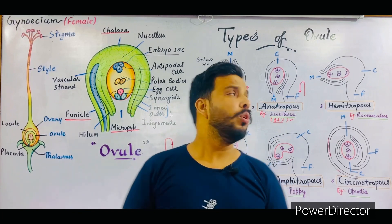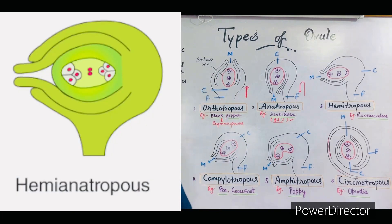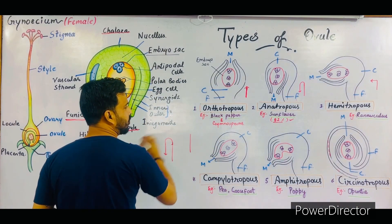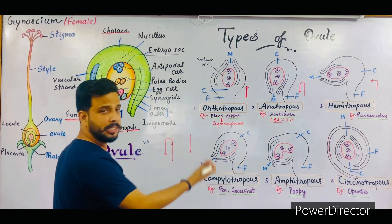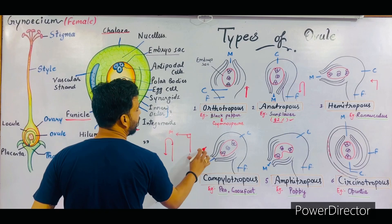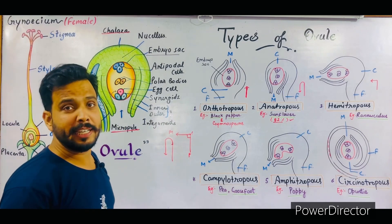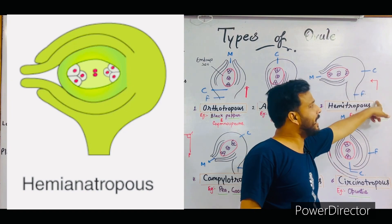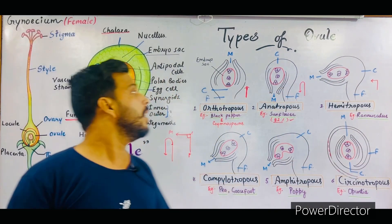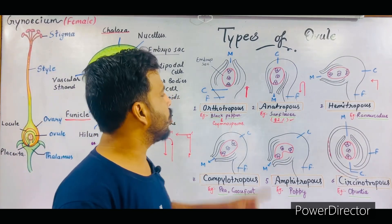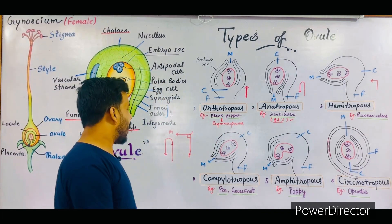The next ovule is hemitropous. Hemitropous is a mid-condition between orthotropous and anatropous. If the ovule is straight it is orthotropous; if inverted it is anatropous; but hemitropous is neither — it makes a right angle. The micropyle, chalaza, and funicle produce a right angle of 90 degrees, so the ovule is transverse. The example of hemitropous ovule is Ranunculus, a very beautiful flower.